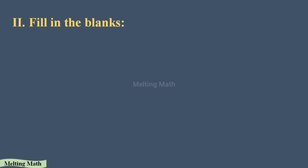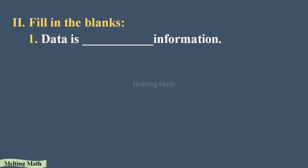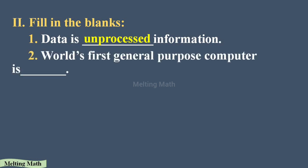Part B: Fill in the blanks. First: data is __ information. Data is unprocessed information. Data is a collection of information that has not been processed or analyzed. Since we are not analyzing it, it is in an unprocessed condition — that is why we say data is unprocessed information.